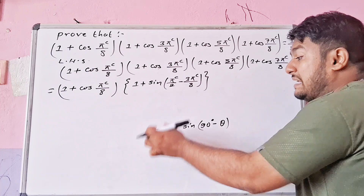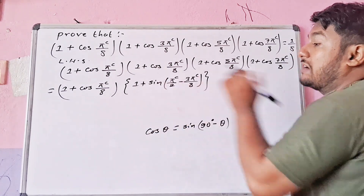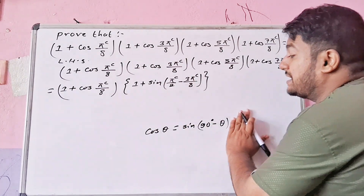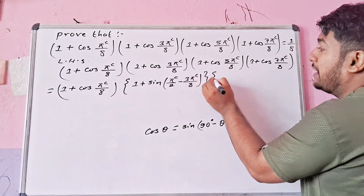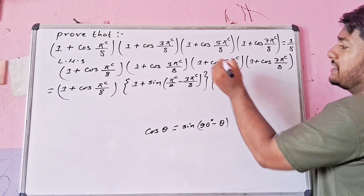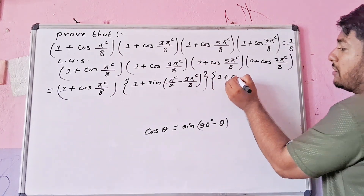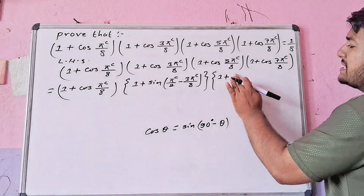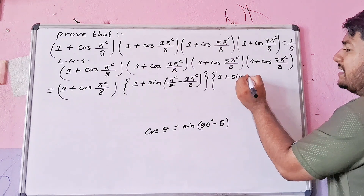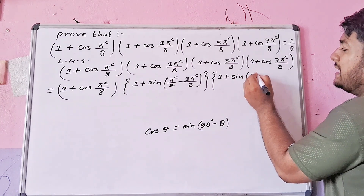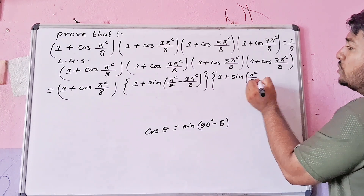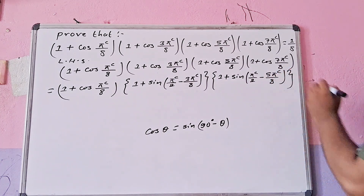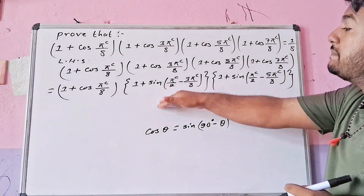Using the identity sin(90° − θ) we can change the terms. So, 1 + cos(5π/8) can be rewritten. We note that π/2 minus 5π/8 gives us a substitution we can use.